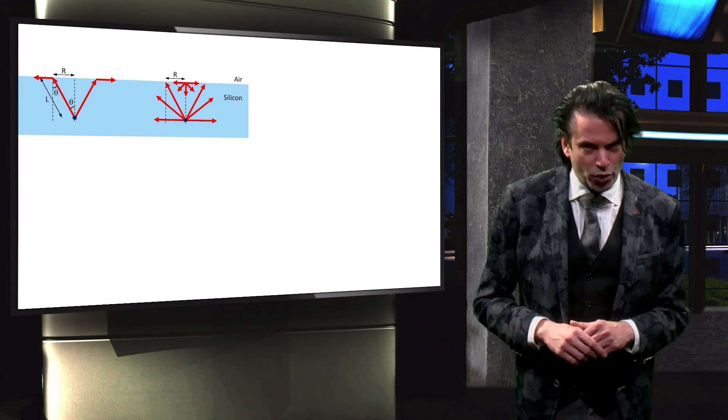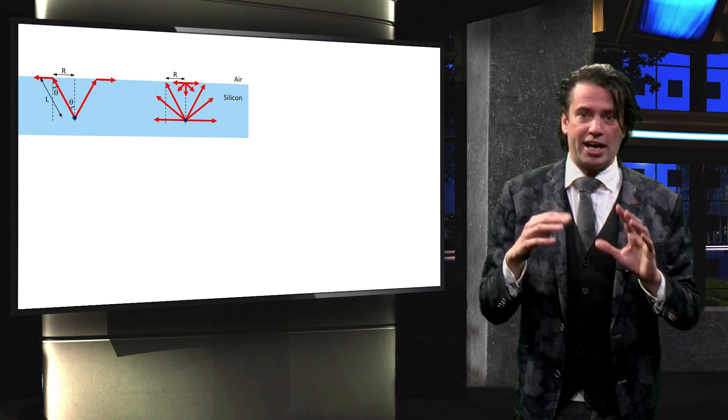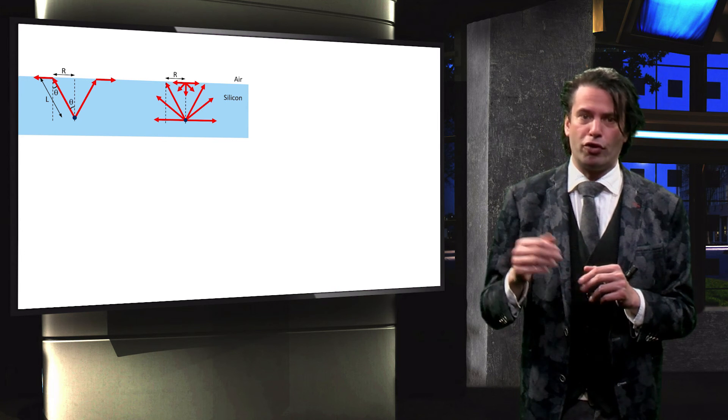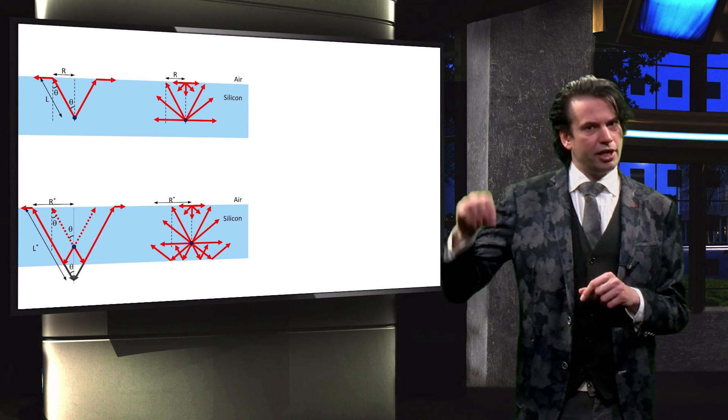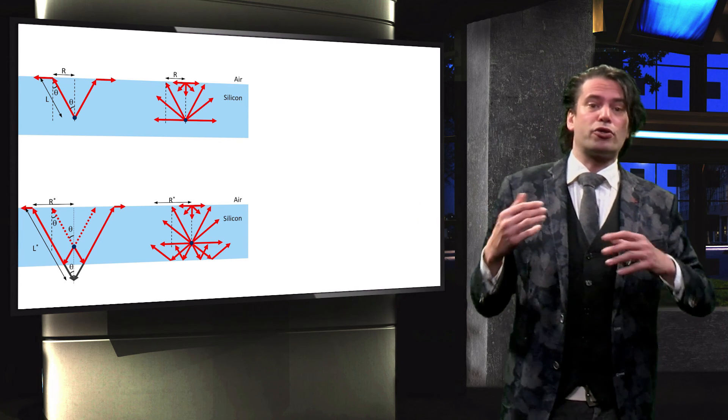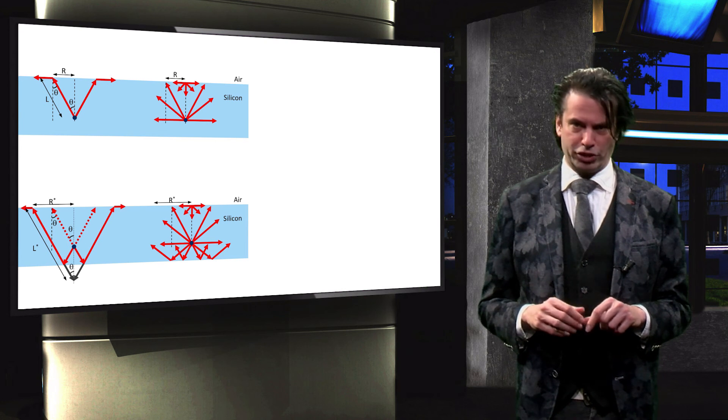In summary, we observed how the absorption in a bulk solar cell is enhanced by 2N squared if a Lambertian scatterer is introduced at the front of the bulk layer. Introducing both an ideal reflector and a Lambertian scatterer increase the absorption in the bulk by a factor of 4N squared, which is known as the Yablonovitch limit.